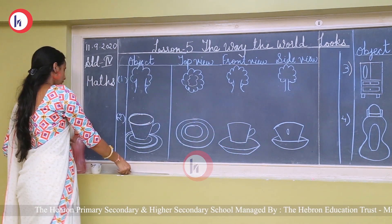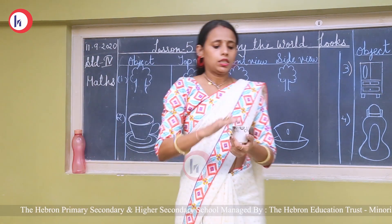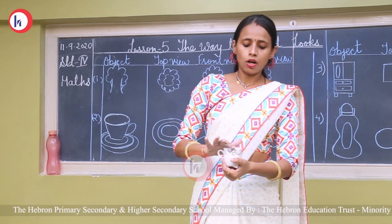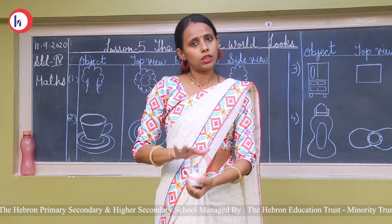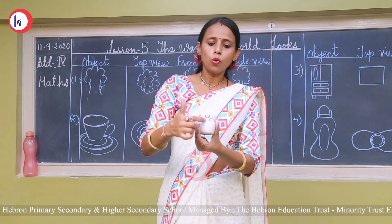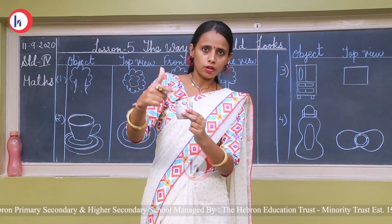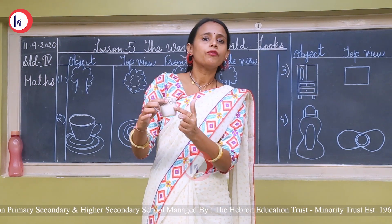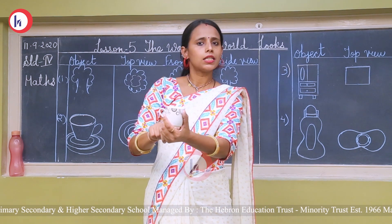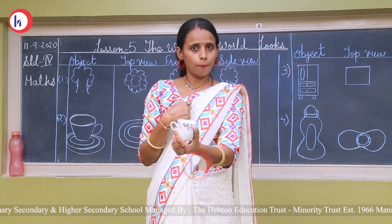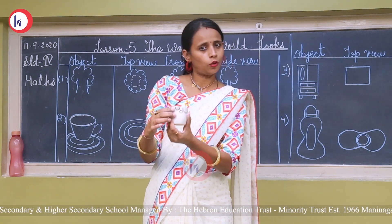Now take an example. This is a cup. So this is the top view because when we see from the top, we can see only that part. You are in front, so this part is in front of your side — this is the front view from your side. And from my side, I can see this side — this is the front view from my side. Now both remaining sides are the side view.